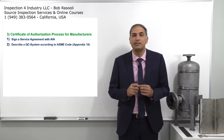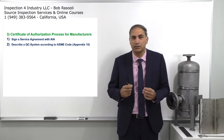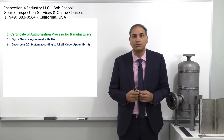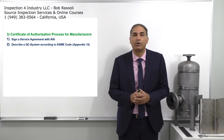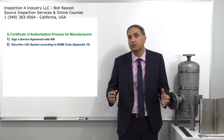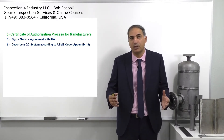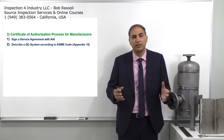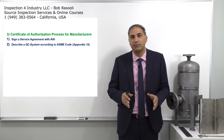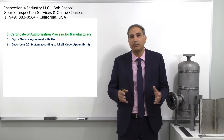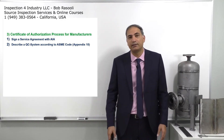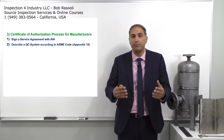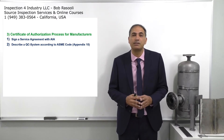The second item is to describe a QC system — a quality control system — according to ASME Code Appendix 10. Appendix 10 is the roadmap for any manufacturer that wants to become an ASME pressure vessel manufacturer. They implement this quality control system in their organization, and it will be audited to determine if it has been properly implemented and described.